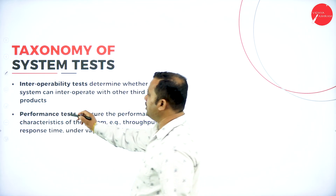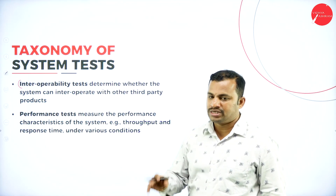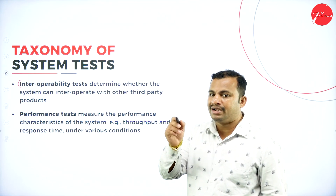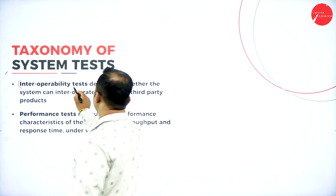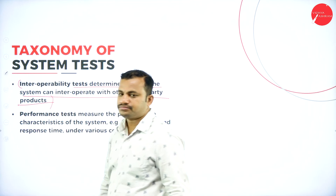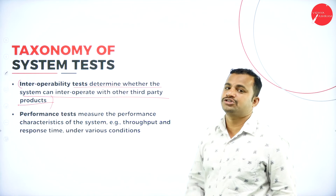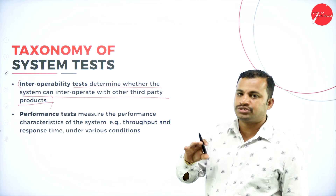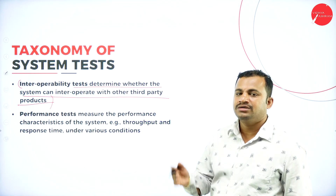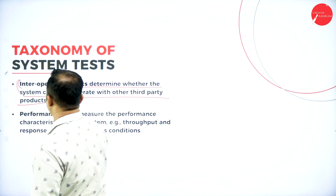Fourth one, interoperability test. Suppose I have developed the system in a Windows environment — the same software must also work on a Unix operating system environment. Tests determine whether the system can interoperate with other third-party products. The third-party product may be a licensed version of the software that has to be associated with the software product so that it works efficiently in the stakeholder's system.